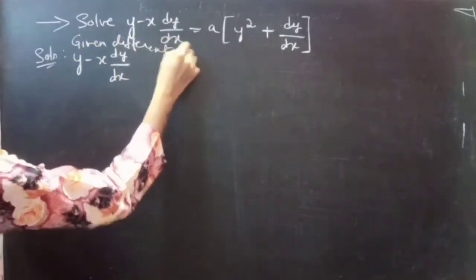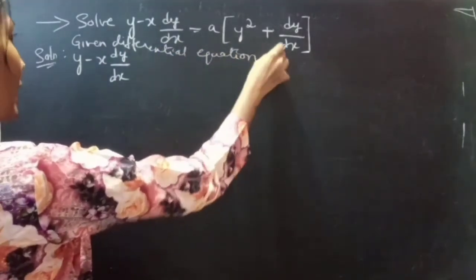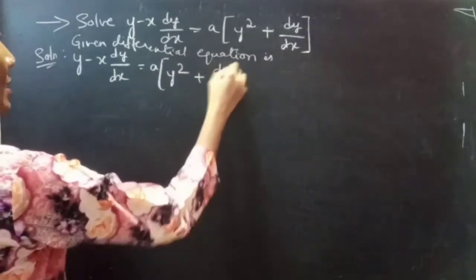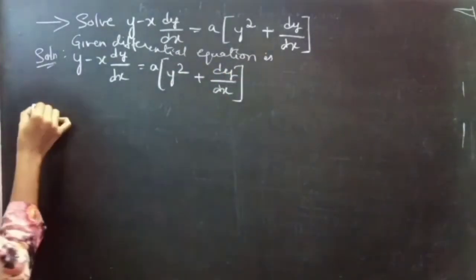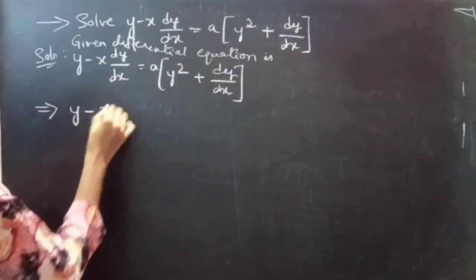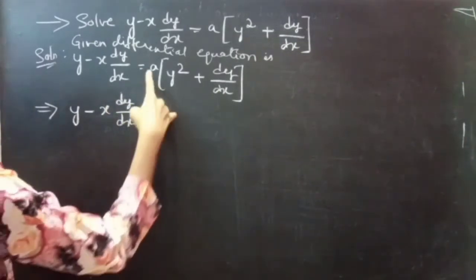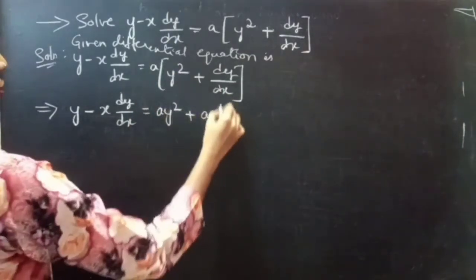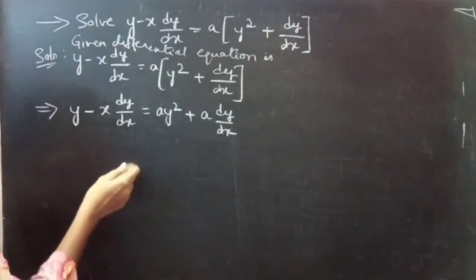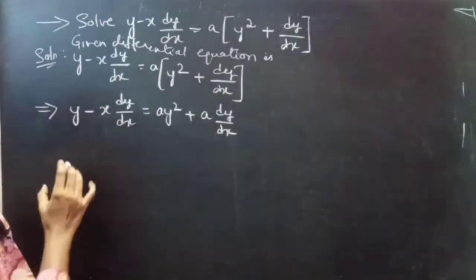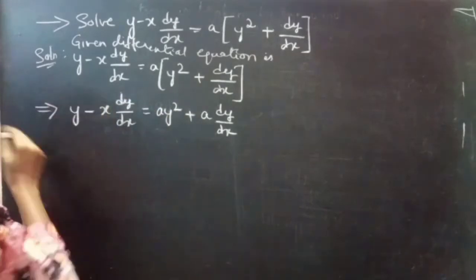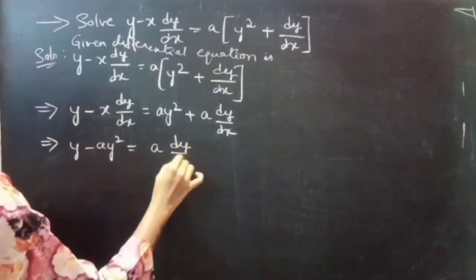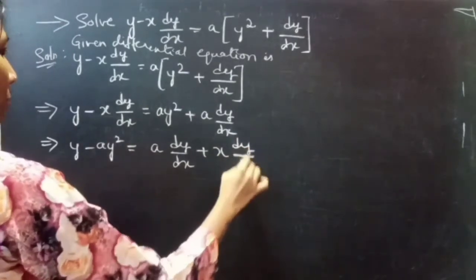The given differential equation is y minus x into dy/dx equals a into y squared plus dy/dx. We can write it as y minus x into dy/dx equals a into y squared plus a into dy/dx, by multiplying the whole term with a.